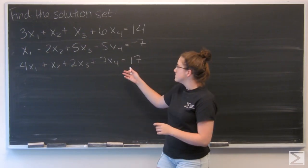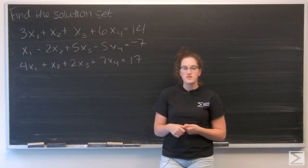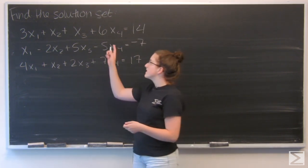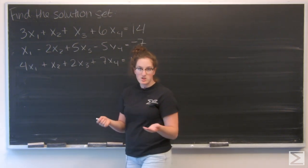For this question I am given three equations of four variables and I am asked to put the augmented coefficient matrix in reduced row echelon form and find the solution set. So I'm going to start by just writing out that augmented coefficient matrix.